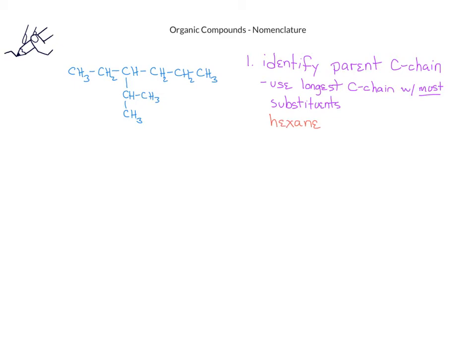Now that we've identified the main carbon chain, we want to identify the substituents. The substituents will be a one-carbon substituent and a two-carbon substituent. A one-carbon substituent is named methyl and a two-carbon substituent is named ethyl.